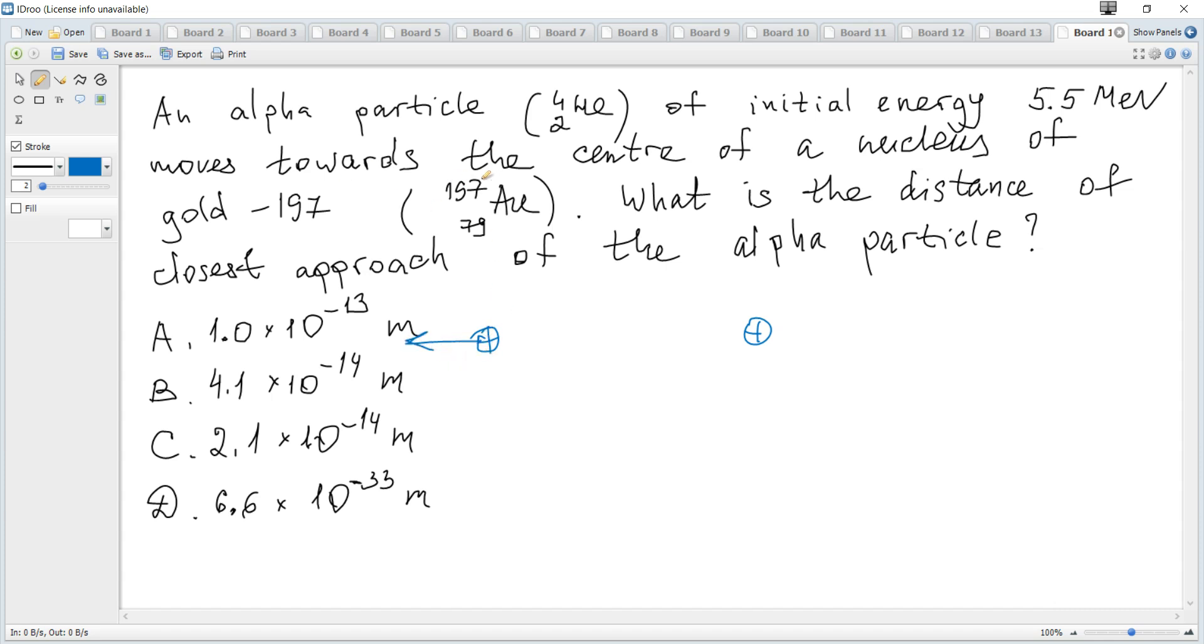An alpha particle experiences deceleration during its motion, and the greatest distance that an alpha particle can travel will be the closest distance to the gold nucleus, which is called the distance of closest approach. It can be found from the law of conservation of energy.